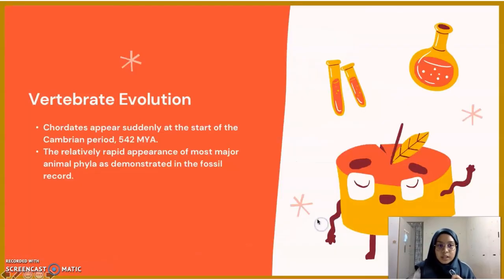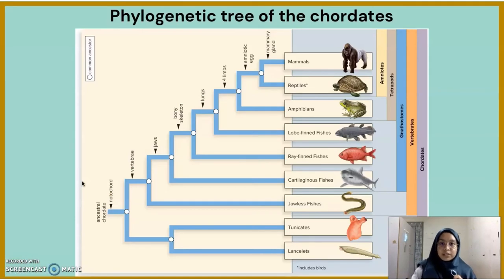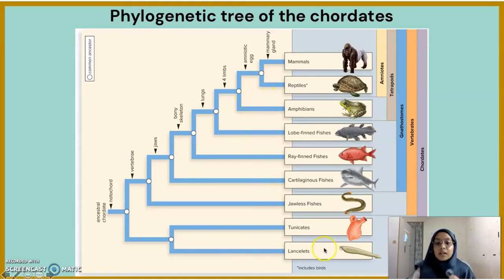Now we look at vertebrate evolution. Chordates appear suddenly at the start of the Cambrian period, 542 million years ago. We can trace their evolutionary history from this phylogenetic tree of the chordates. The groups include chordates, vertebrates, gnathostomes, tetrapods, and amniotes. Lancelets and tunicates are in the out-group, while jawless fishes, cartilaginous fishes, ray-finned fishes, lobe-finned fishes, amphibians, reptiles, birds, and mammals are in the in-group.